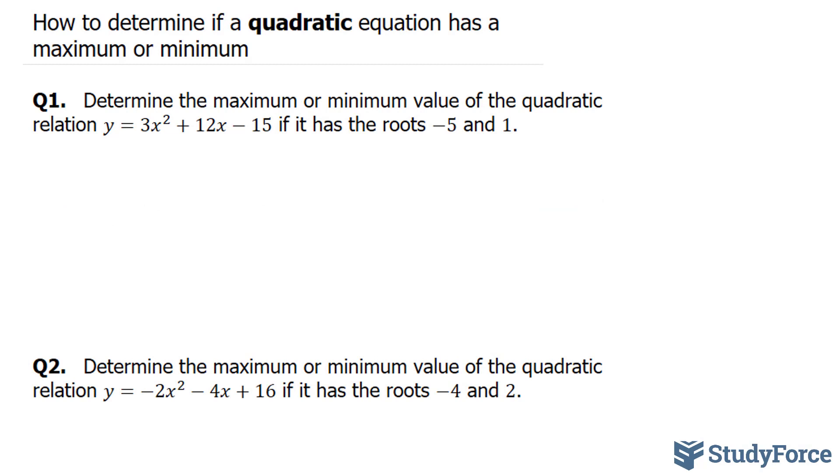For this particular question, they've given us the roots already. And we know that when this a term, the term that contains the x squared, has a positive value, then the parabola opens upwards. So if this is positive, you're going to have a graph that looks like this, therefore you will have a minimum.